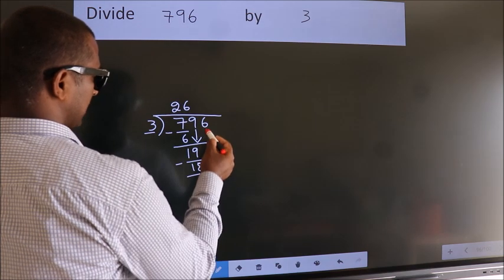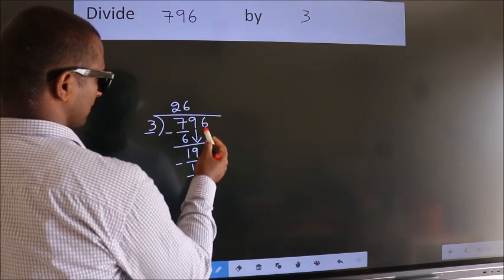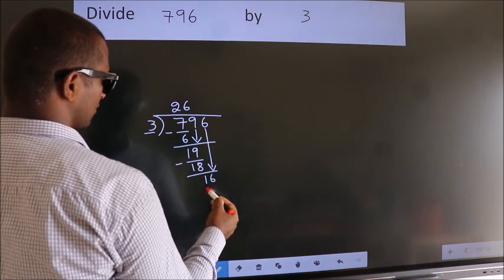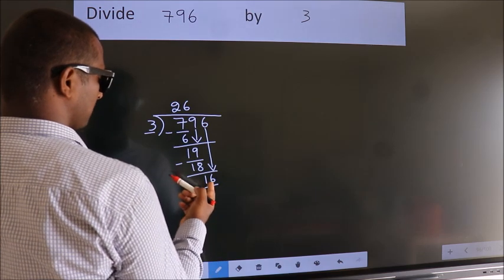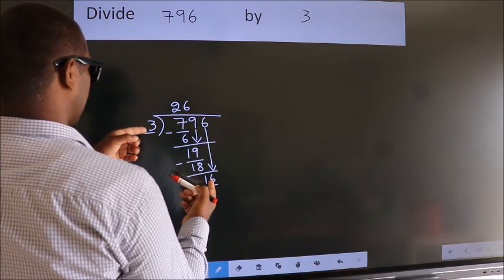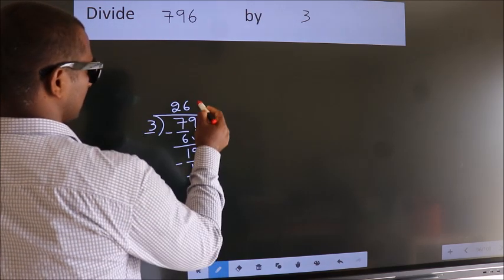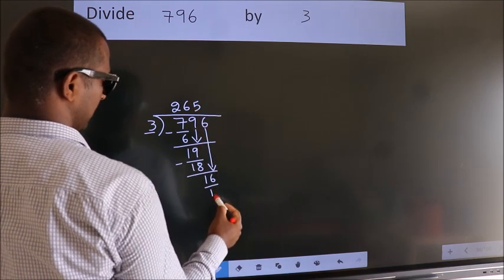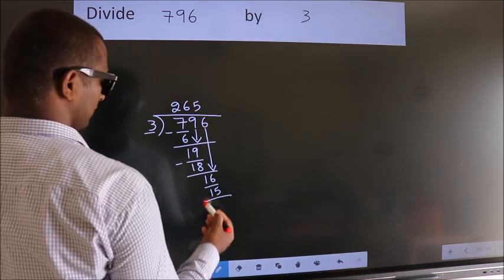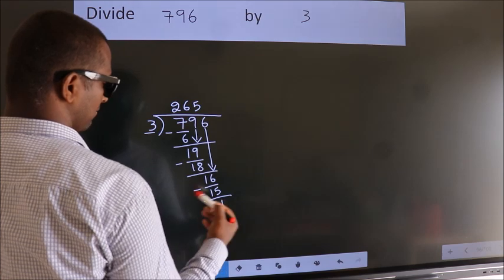After this, bring down the beside number. So 6 down, so 16. A number close to 16 in 3 table is 3 times 5 equals 15. Now we subtract. We get 1.